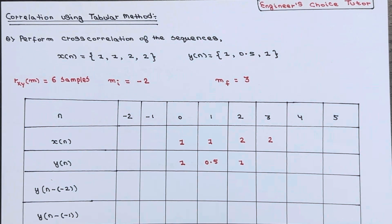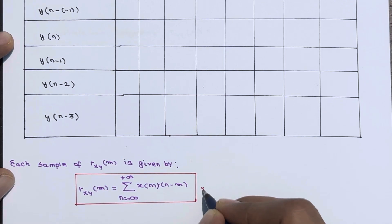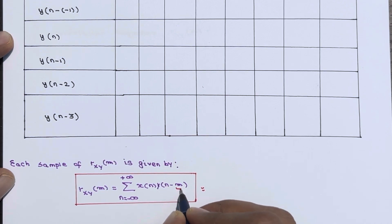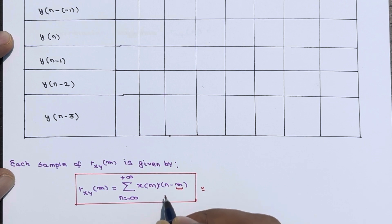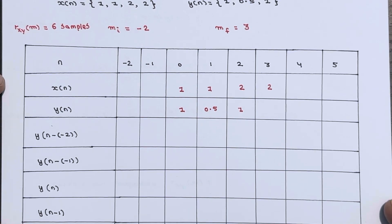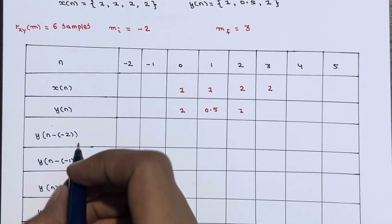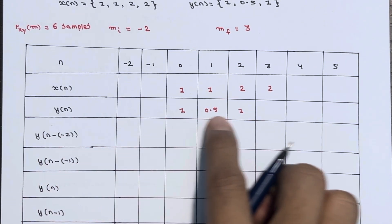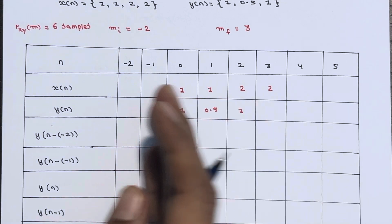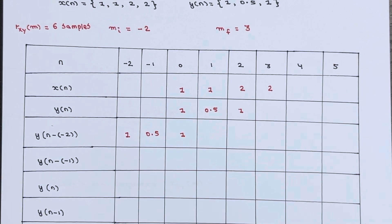Each sample of rxy(m) is given by the formula you already know. Based on different values of m, y(n) will be shifted, giving different shifted versions in the table. The initial value of m is minus two, so it becomes y(n - (-2)) = y(n + 2). Since y(n) starts at n=0, y(n+2) shifts two units left, starting from n = -2: one, zero point five, and one.